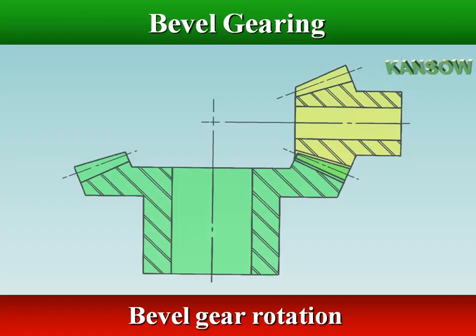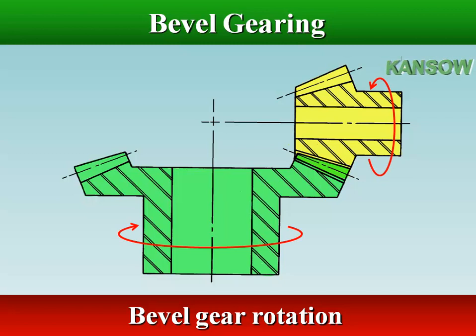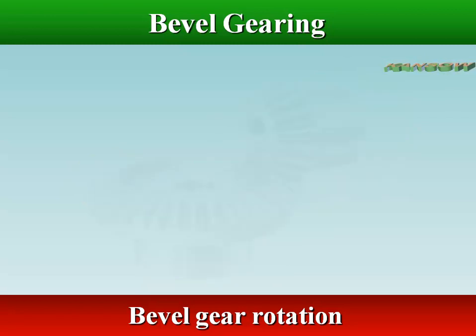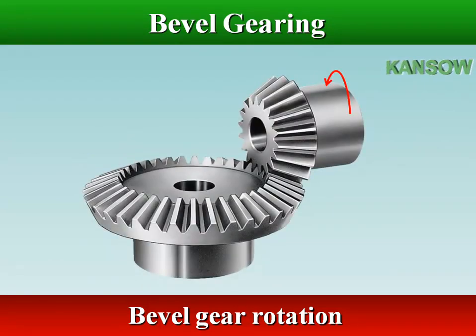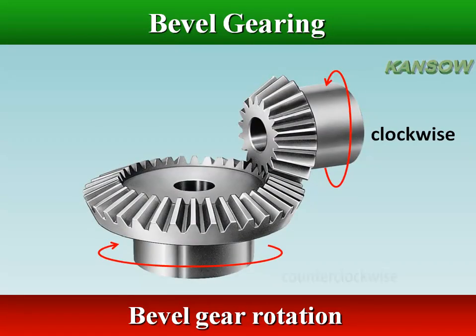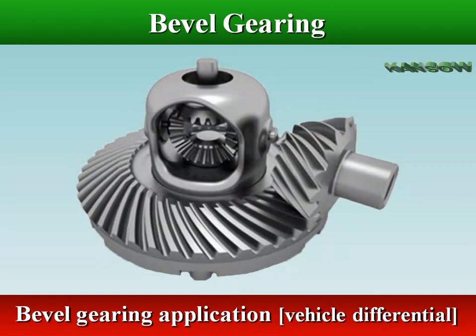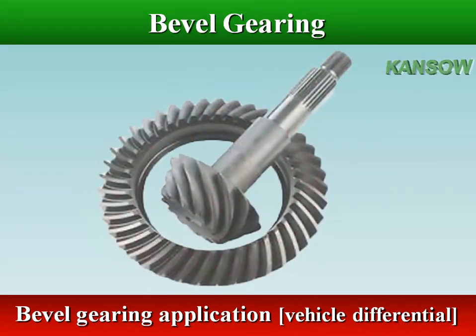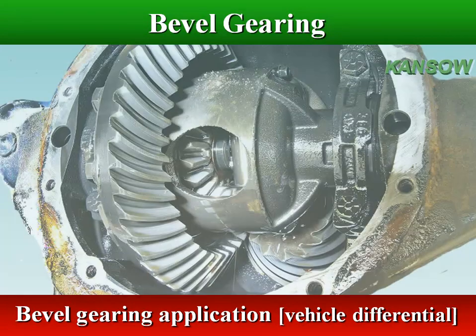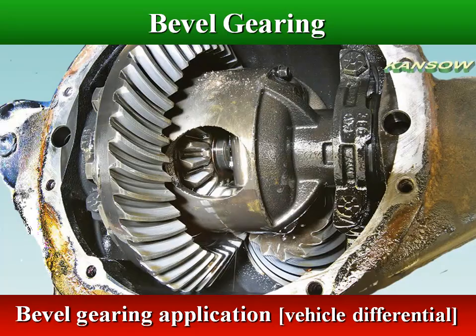The direction of rotation of a bevel gear is determined as clockwise or counterclockwise by viewing the gear from the back. The main application of bevel gearing is in a vehicle differential, where the direction of drive from the drive shaft must be turned 90 degrees to drive the wheels.